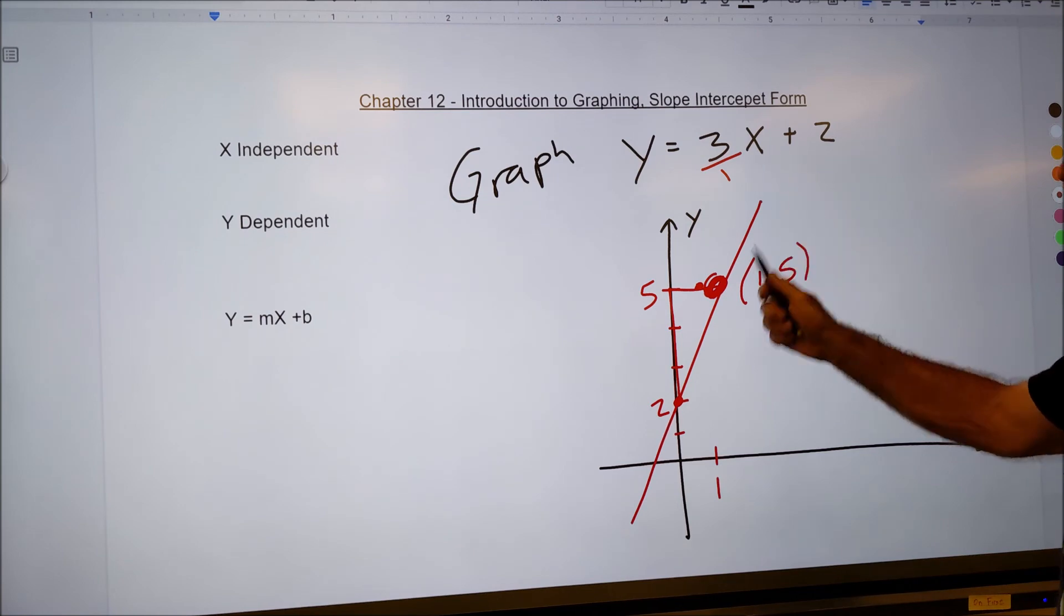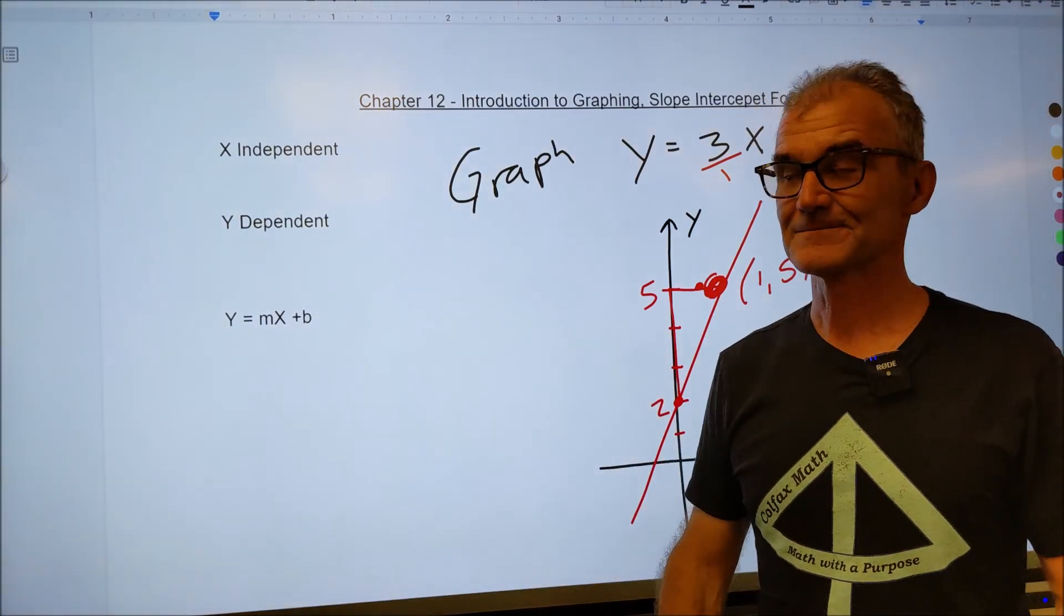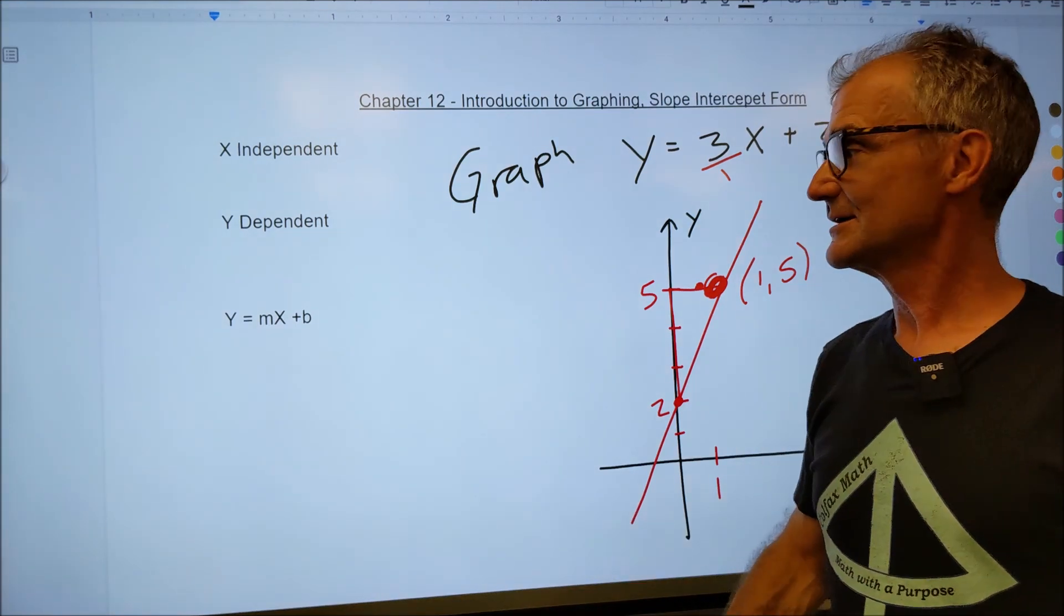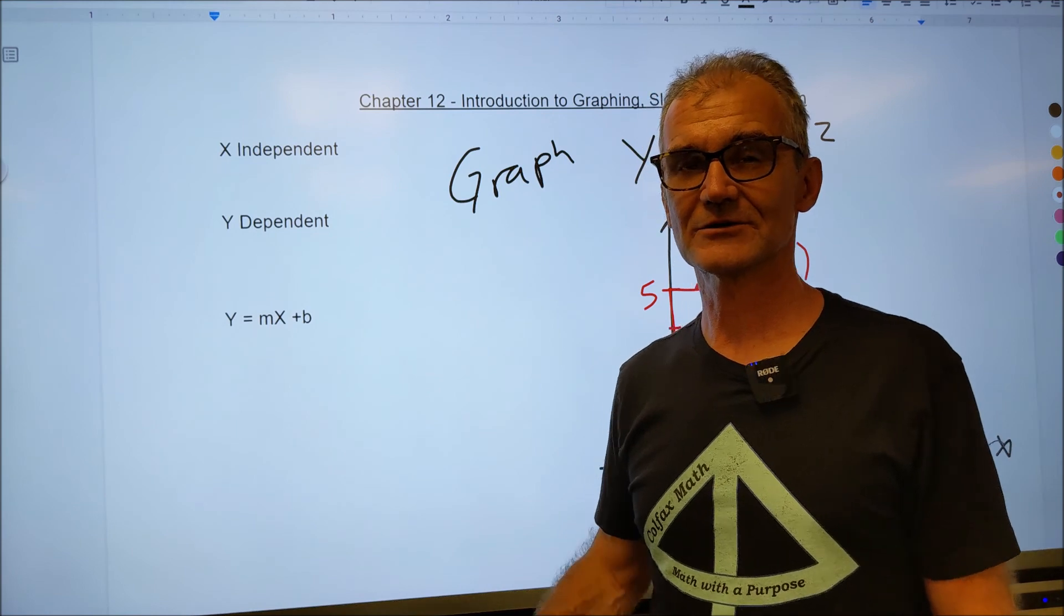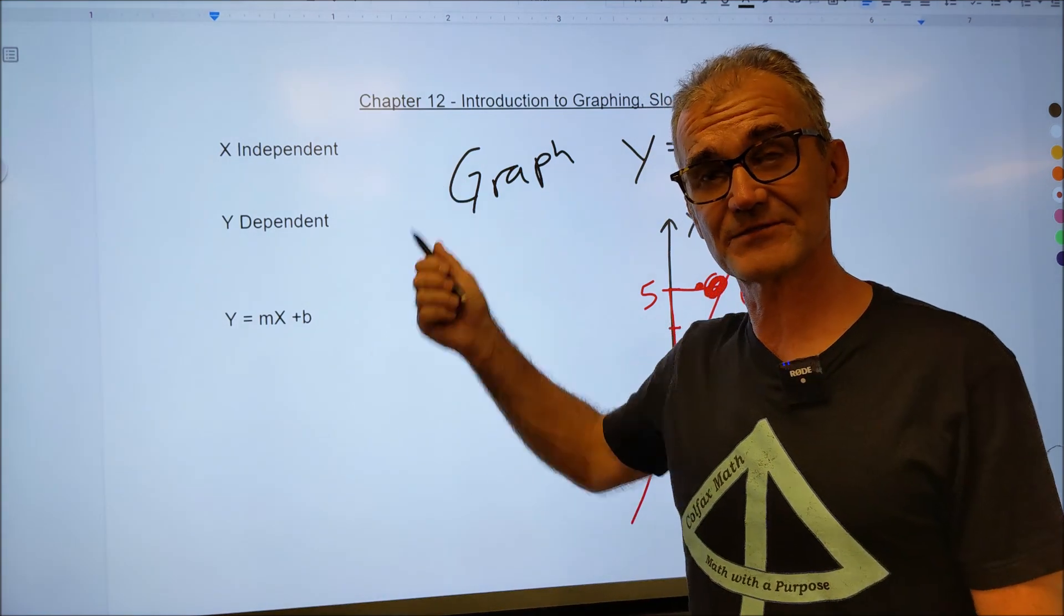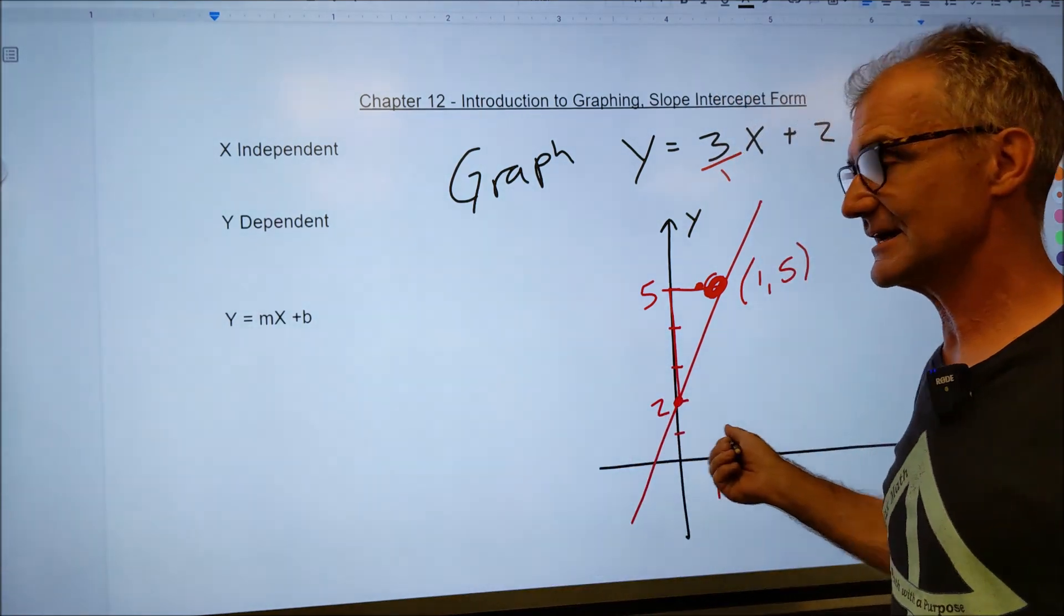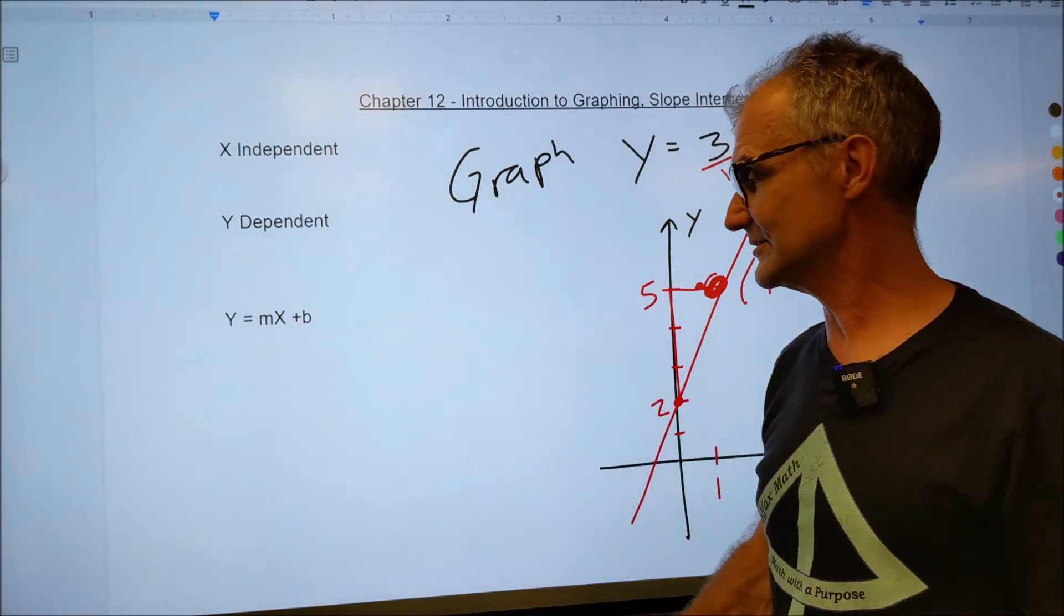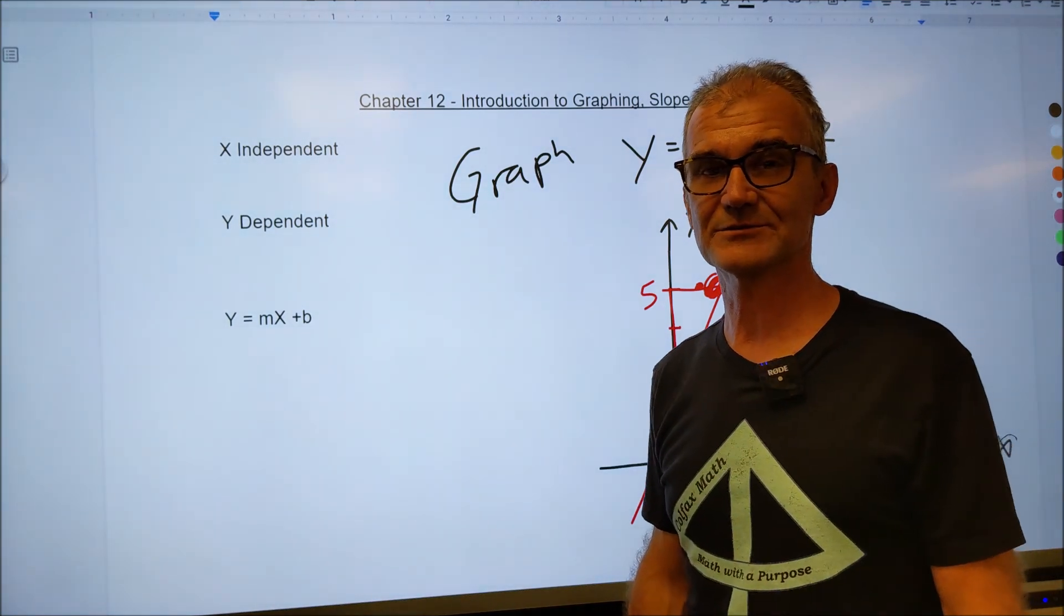There's a million applications of graphing and millions of different types of problems. But that is a quick overview of graphing on the Cartesian coordinate system. Again, remember the vertical axis is y, your dependent variable. Horizontal axis is x, your independent variable. If you have any questions at all, please post them in the comments and I'll get to them as soon as I can.